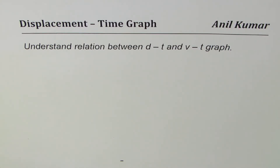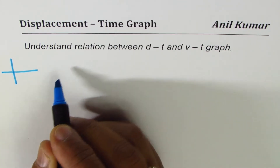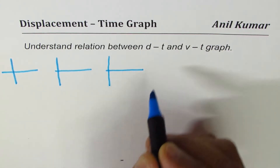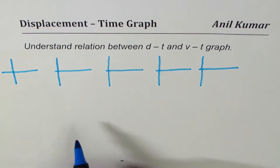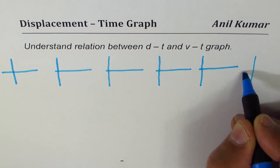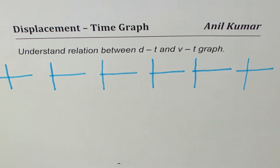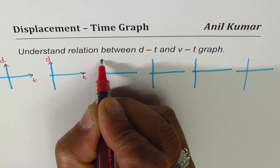I'm Anil Kumar and in this video we'll try to understand the relation between displacement-time and velocity-time graphs. I'll sketch six different displacement versus time graphs and discuss them one by one. When displacement changes, velocity changes, and when velocity changes, acceleration changes. The y-axis will be displacement and the x-axis will be time.